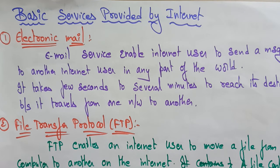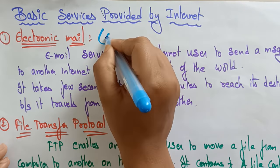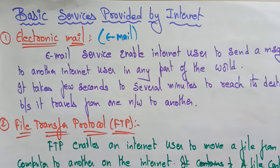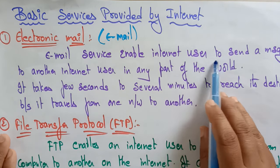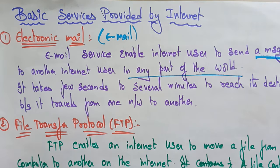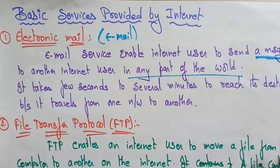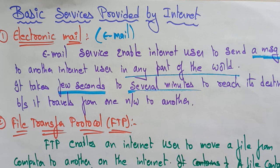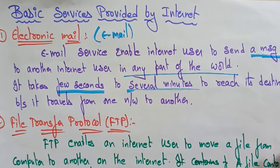The first basic service provided by the internet is electronic mail, or email. Email is a service that enables an internet user to send a message to another internet user in any part of the world. It takes only a few seconds to several minutes to reach its destination, because it travels from one network to another.